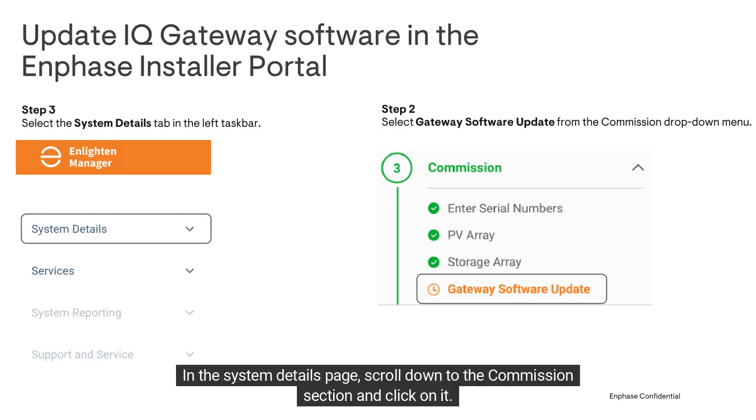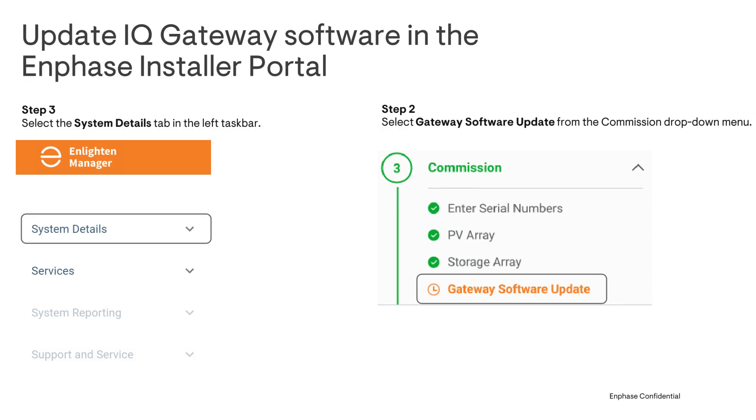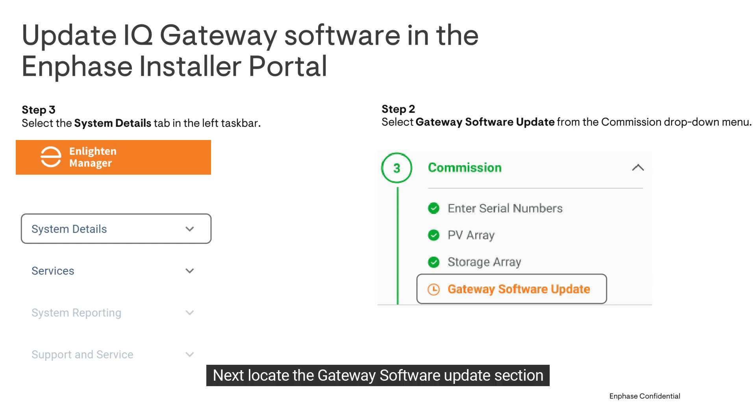In the system details page, scroll down to the commission section and click on it. Next, locate the Gateway software update section.